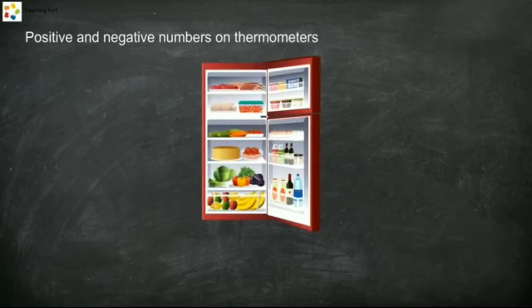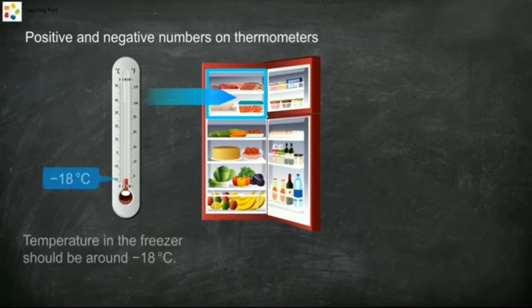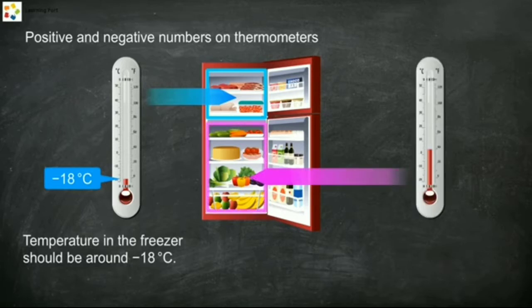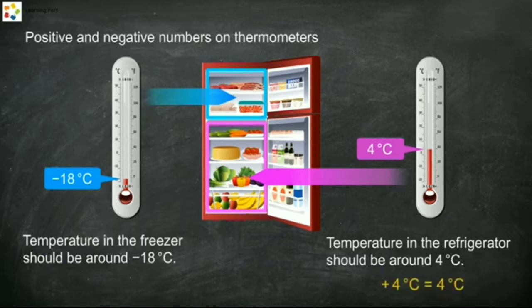Do you know that the optimal temperature in the freezer of a refrigerator is around negative eighteen degrees Celsius, and that in the other compartments is around four degrees Celsius? It is because different food stuffs require different temperatures to keep them fresh for a long time. Note that a positive number such as positive four degrees Celsius can be written without the positive sign.